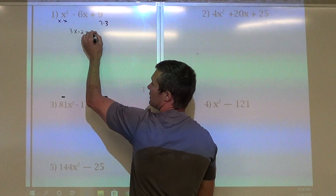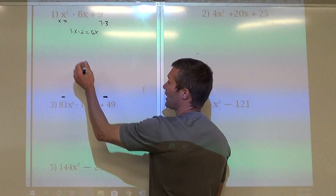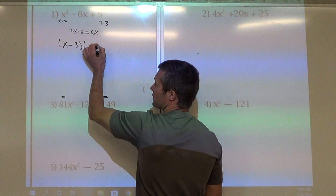So to put it in a perfect square, or to write in factored form, it'd just be x minus 3 times x minus 3, or x minus 3 squared. That would be our answer.